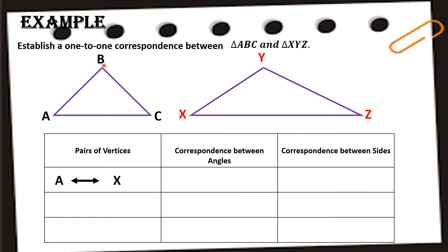Continuing the vertex correspondence: point B corresponds to Y. Then lastly, point C corresponds to point Z. Those are our pairs of corresponding vertices.